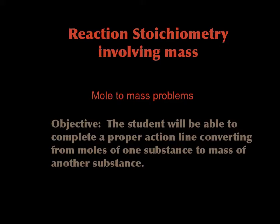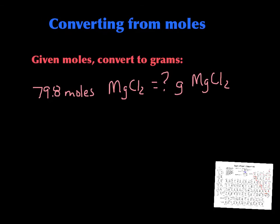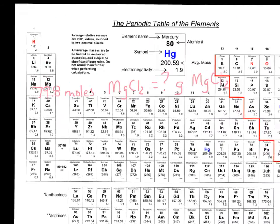I want you to be able to do an action line, changing from moles of one substance to mass of another substance. Just a little reminder that when we're given moles and we have to convert to grams, we always have to go to our periodic table. You can see on this one we have 79.8 moles of magnesium chloride, and if we wanted to change that to grams, if this were just a one-step deal where we're changing over to grams, then we would look at our periodic table.